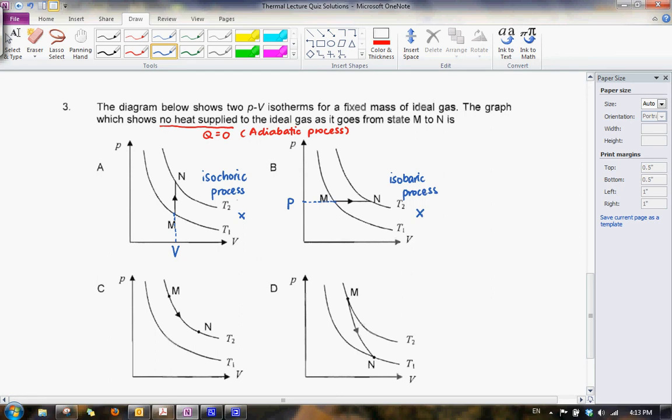Now for option C, we can see that M to N lies actually on an isotherm. So this is an isothermal process, and what it means is that the T is constant. So it means that D must be the answer.